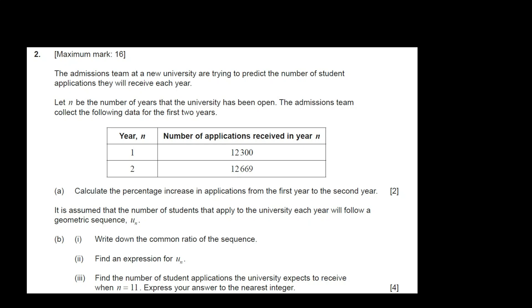Welcome guys to a new video. In this one we have arithmetic and geometric sequences, past exam question, let's have a look. Paper 2, exercise 2. The admission team at a new university are trying to predict the number of student applications they will receive each year. And it's going to be the number of years that the university has been open. The admission team collects the following data for the first two years.